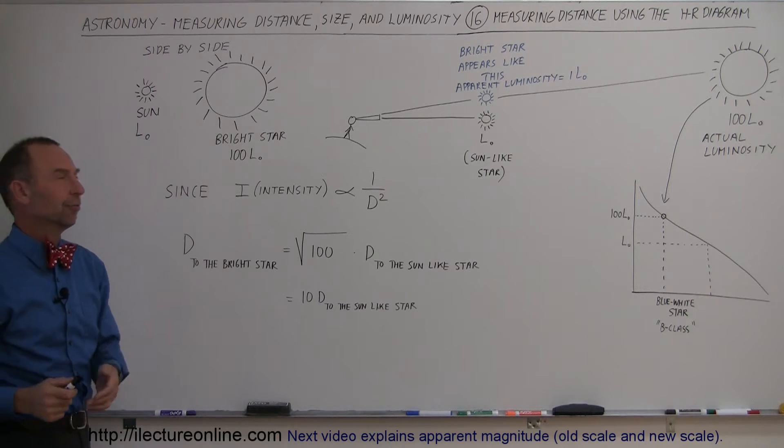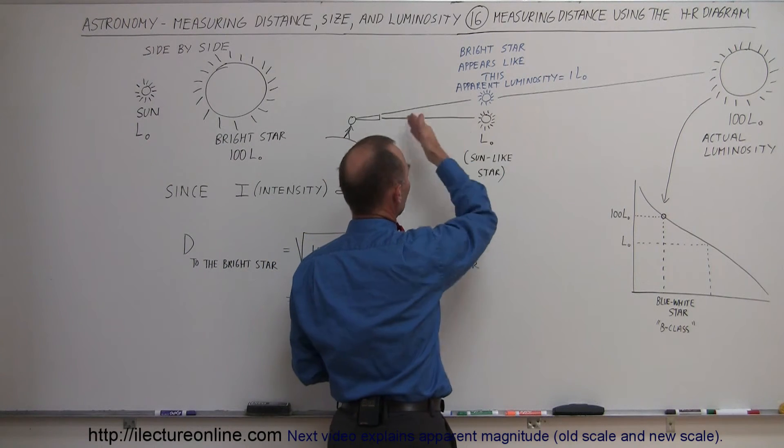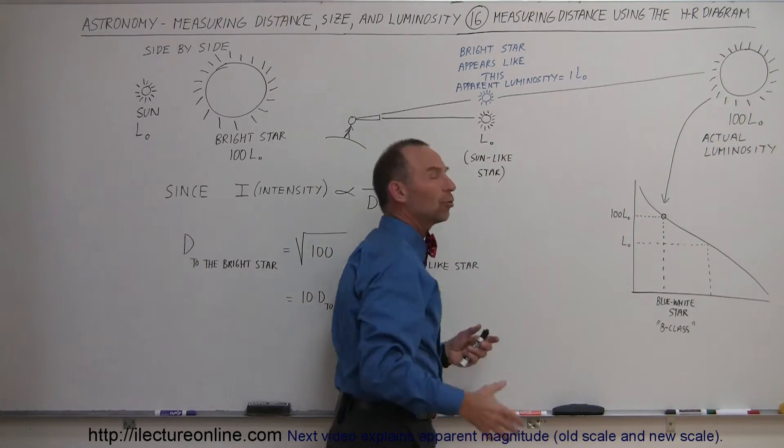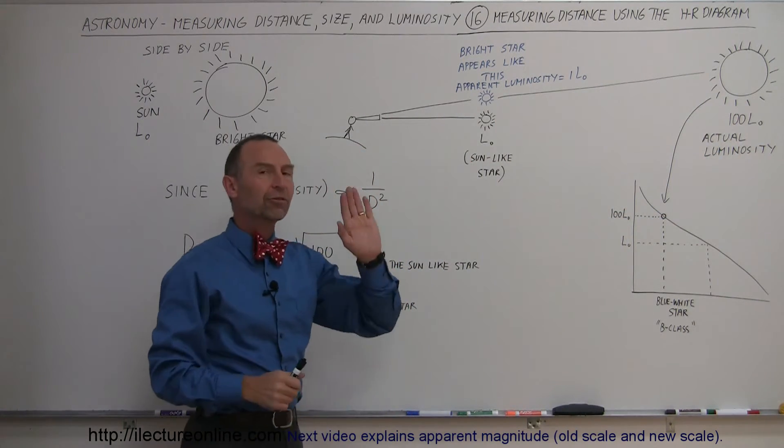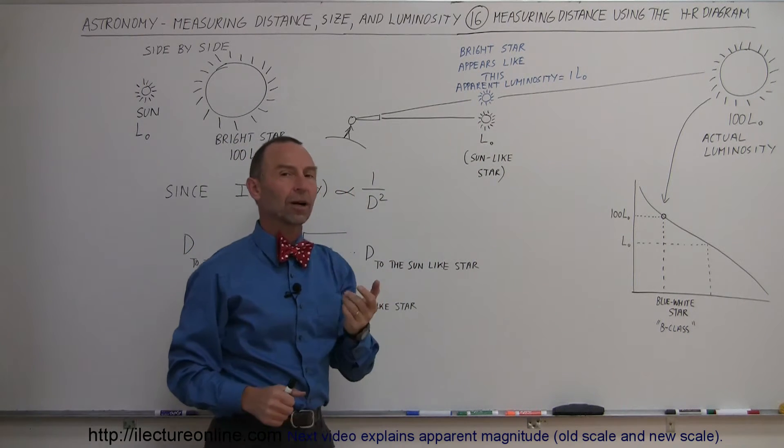So what happens in real life? Well, let's say that we're looking at the two stars. Here's the sun-like star at some distance, and then there we have the very bright star, much brighter than the sun, but since it's so much farther away, let's say that it appears to look exactly the same brightness as the sun-like star.